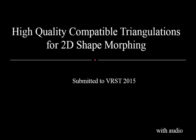In this paper, we propose a new method to compute compatible triangulations of two simple polygons, which allows us to create smooth transformations between two different shapes.